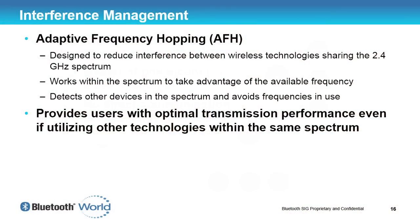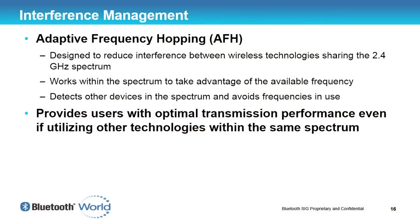Interference management is one of the key benefits Bluetooth brings to wireless communication. Many wireless technologies use a single frequency, which works great until someone else uses that same frequency — like when a new freeway is built and quickly gets congested. Bluetooth has built a very wide freeway with the ability to switch between lanes very quickly to find the clearest lane. It's designed to reduce interference not only between Bluetooth and Wi-Fi, Zigbee, or proprietary technologies, but also so that Bluetooth doesn't get interfered with by other technologies.